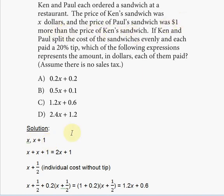So that means the total cost will be X plus X plus one, which equals 2X plus one. This is the total cost of the sandwiches, 2X plus one dollars.